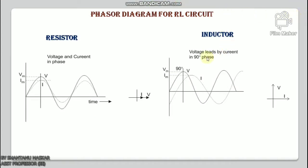Before drawing the phasor diagram of a series RL circuit, one should know the relationship between voltage and current for a resistor and an inductor. In case of a resistor, the voltage and the current are in the same phase — the phase angle difference between voltage and current is zero. In case of an inductor, voltage leads the current by 90 degrees, or in other words, voltage reaches its maximum and zero values 90 degrees before the current does.